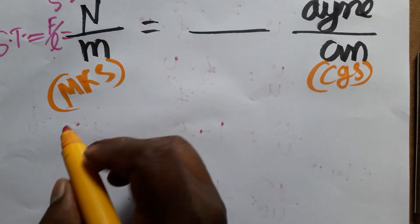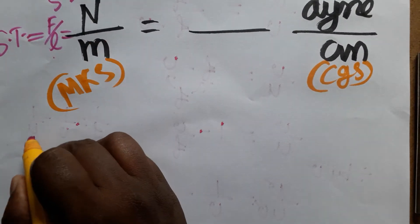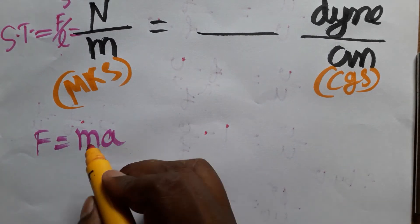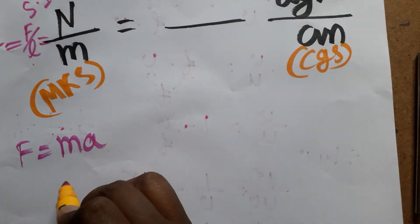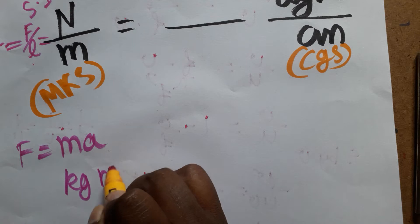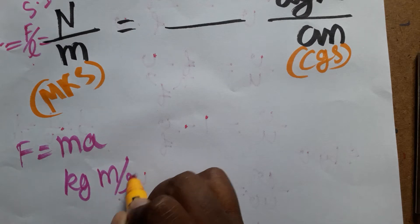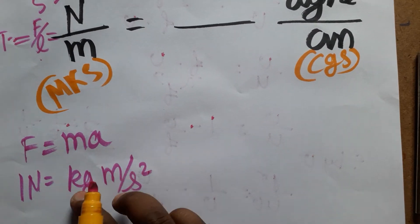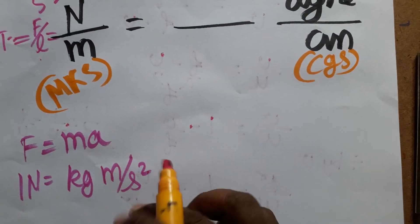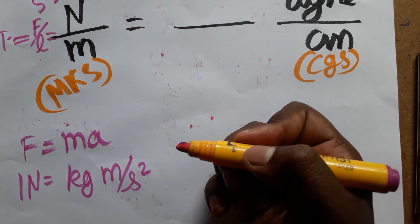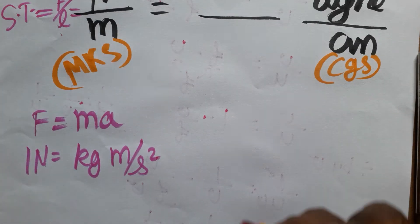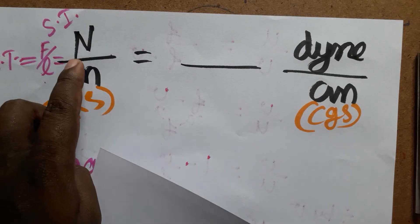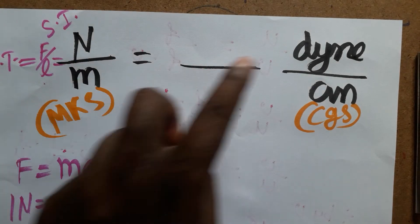Newton is the SI unit of force. Force equals mass times acceleration, so mass unit is kg and acceleration is meter per second squared. So instead of writing newton, we can write it as kg·m·s⁻².